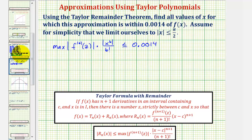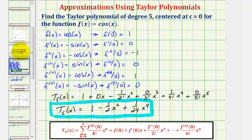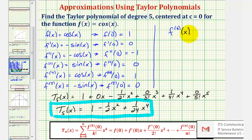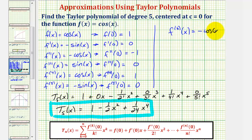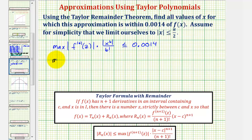Going back to our previous slide, the fifth derivative is negative sine x, so the sixth derivative would be equal to negative cosine x. We can rewrite the error bound as the max of the absolute value of negative cosine z, times the absolute value of x to the sixth, divided by six factorial, less than or equal to 0.0014.